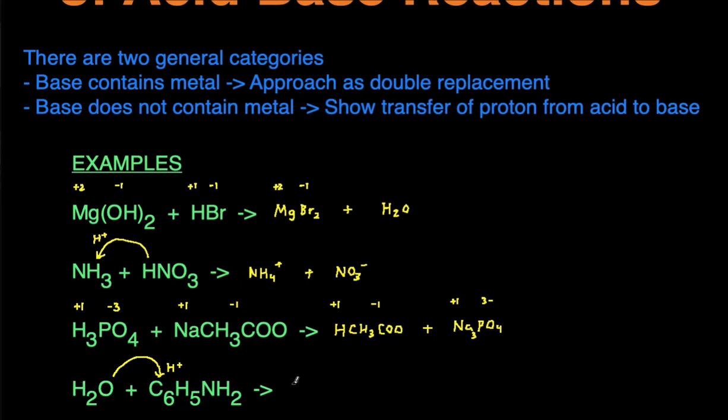When water donates the proton, you're left with OH-, hydroxide. And then when the base picks up a proton, you get C6H5NH3+ with a positive charge. It was neutral originally and then it picked up a positive charge. So there you have it. We just went over the two ways to help us predict the products of acid-base reactions and then we went through four examples.